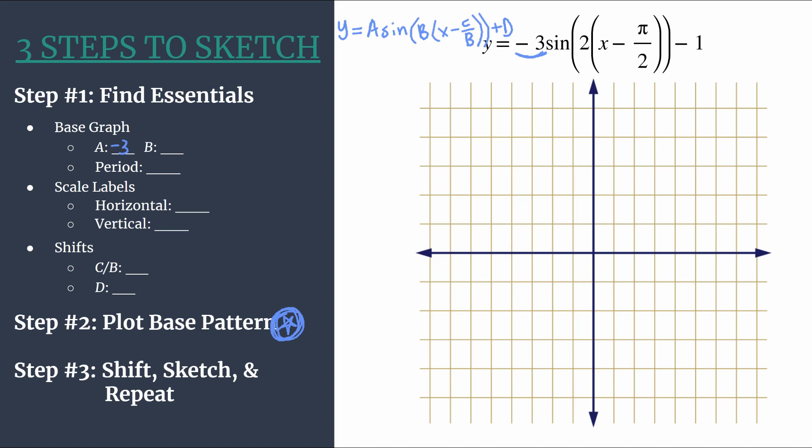All right, so then b, we see b here. It's the coefficient of x, b is two. So we know a couple things from this. First, we know that two cycles of our graph should happen between zero and two π.